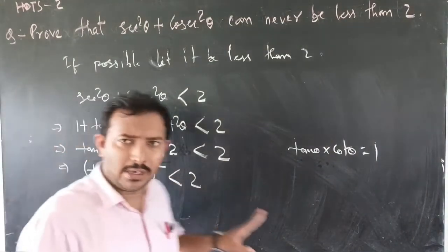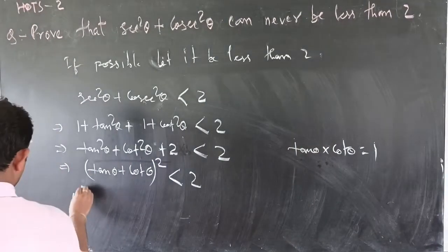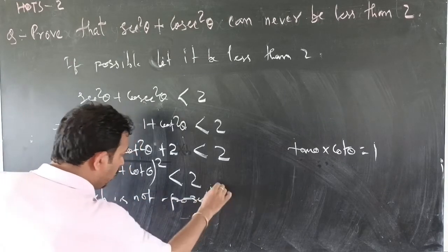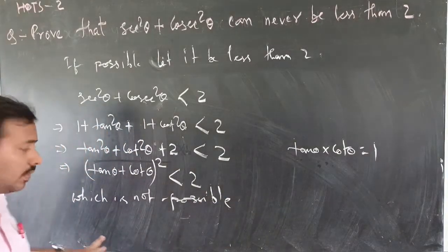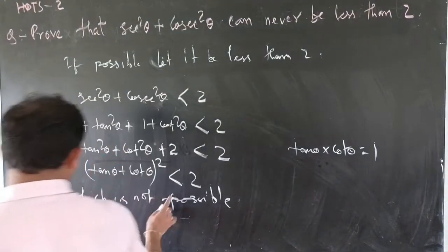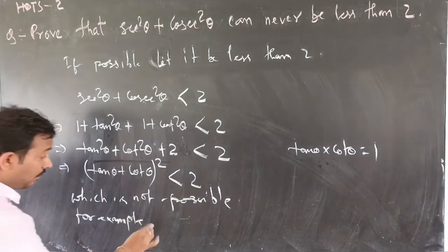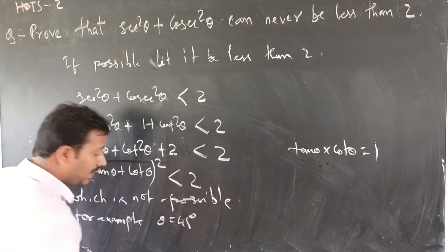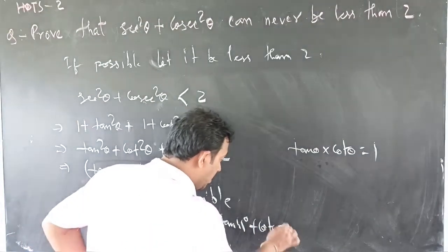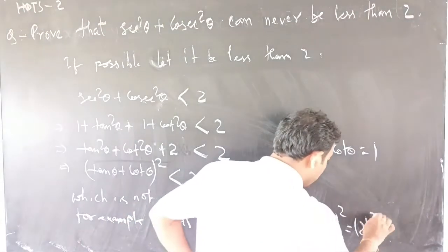Now we check whether this is possible. If we take theta equal to 45 degrees, then tan 45 plus cot 45, whole squared, gives us 1 plus 1, whole squared, which is 2 squared, equal to 4. So the expression equals 4 at 45 degrees, which is not less than 2.